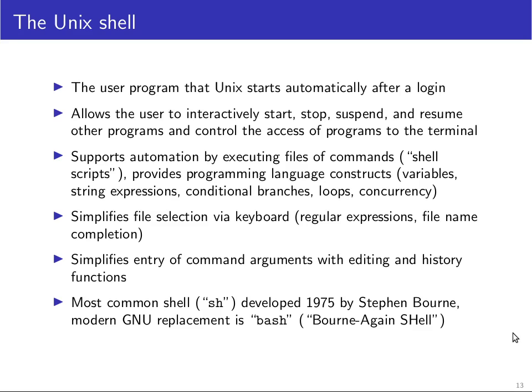The most commonly used shell today on open source operating systems is the GNU replacement called BASH, which is an acronym for 'Bourne Again Shell'. The POSIX standard looked at a number of different shells and in particular at an extension of the Bourne shell called the Korn shell, which influenced what POSIX specifies as the minimum functions a compatible shell must provide. Therefore BASH is also a descendant of the Korn shell.